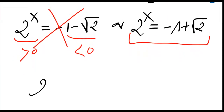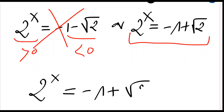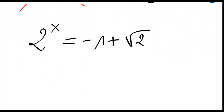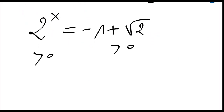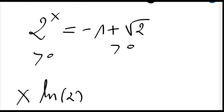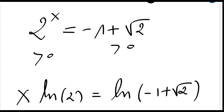The second equation is 2 to the power x equal to minus 1 plus the square root of 2. I know this is greater than zero, and this is also greater than zero. So if I use the log function, I will just have x times ln(2) equal to ln(minus 1 plus the square root of 2).